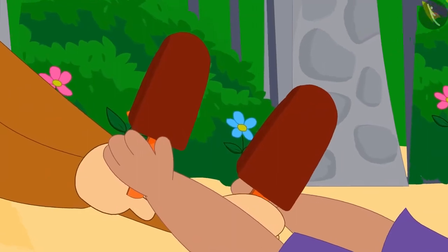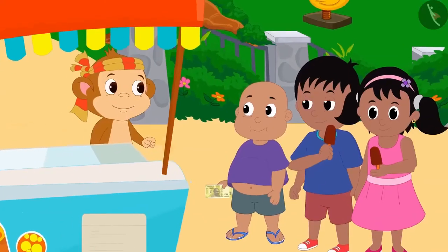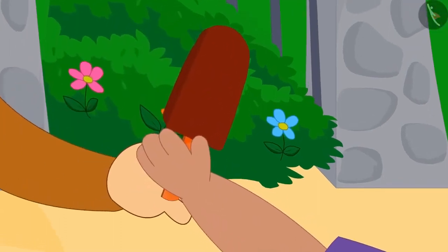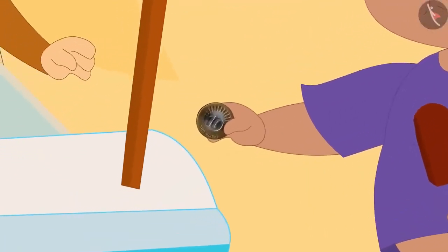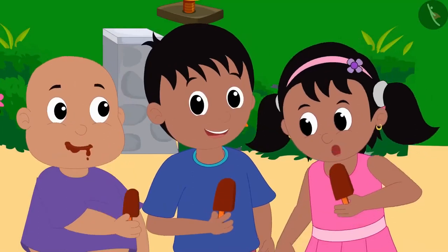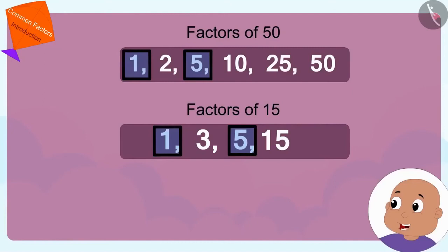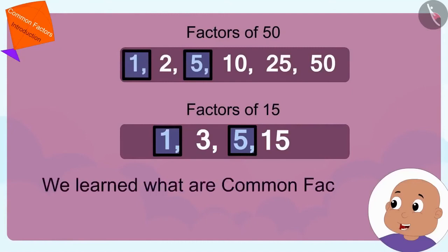Babloo bought 2 ten-rupee chocobar ice creams from his 20 rupee note and a 10 rupee chocobar ice cream from his 10 rupee coin. Together with Pinky and Raju, they ate ice cream with great pleasure. In this video, we learned what are common factors. In the next video, we shall learn more about it by using some interesting examples.